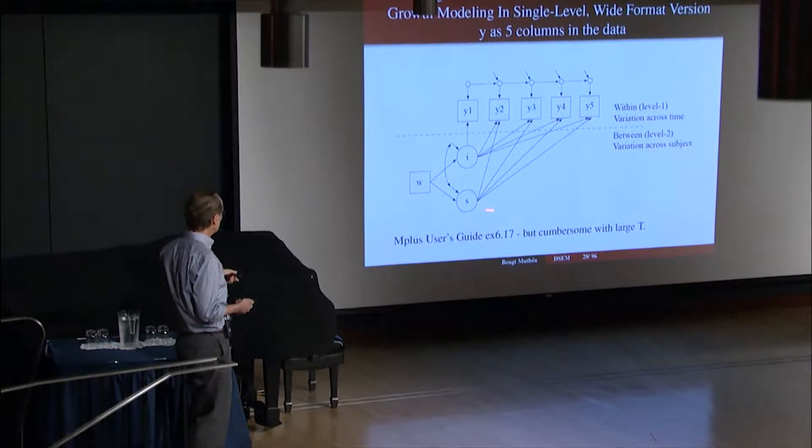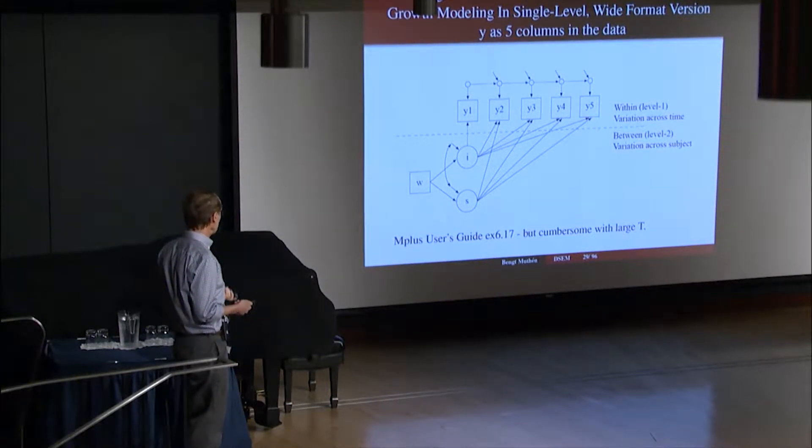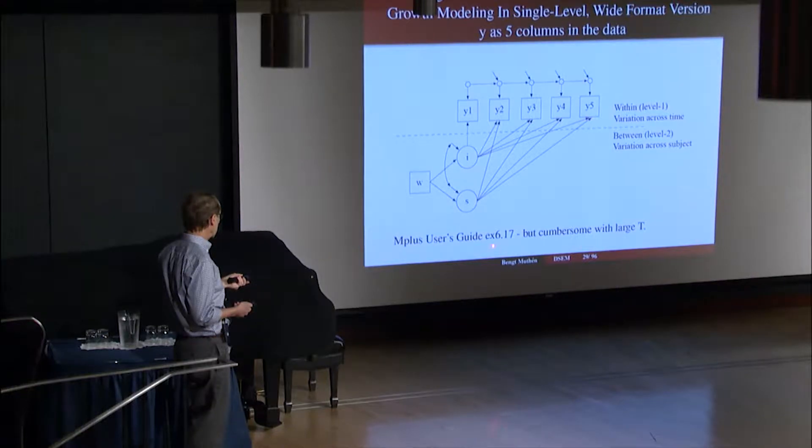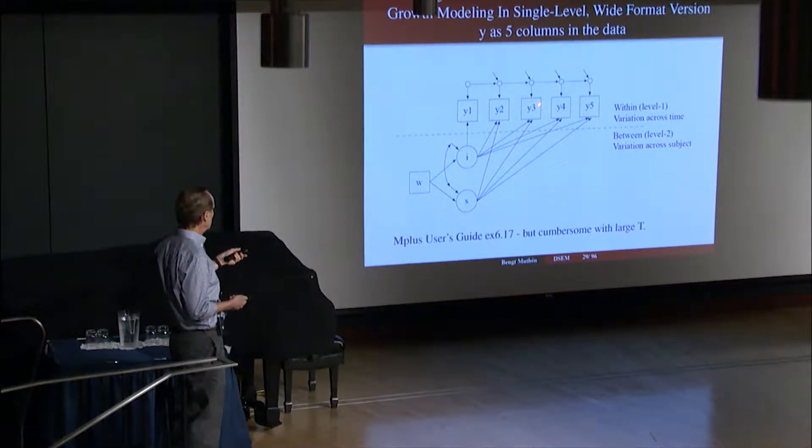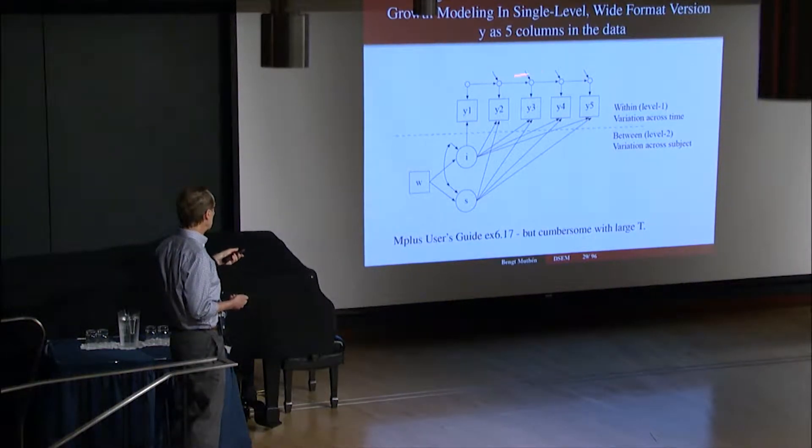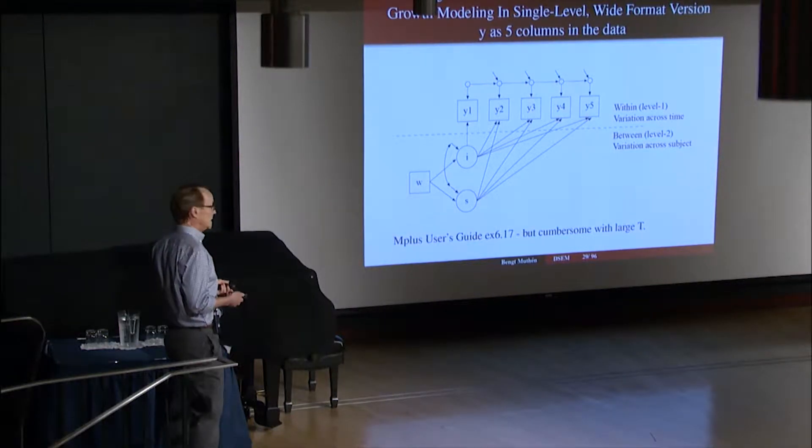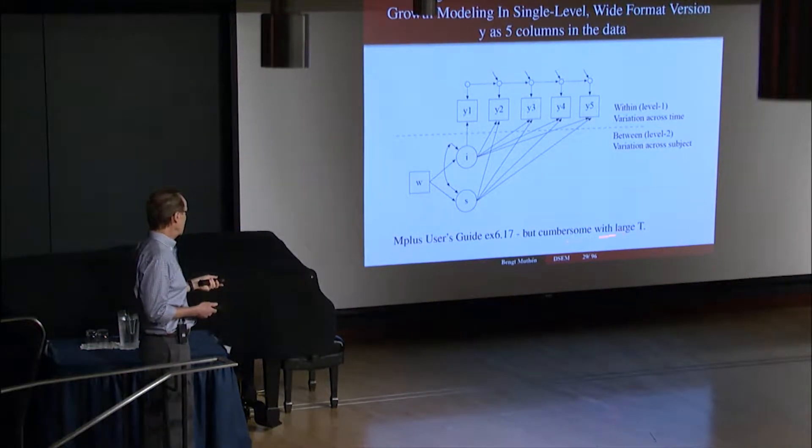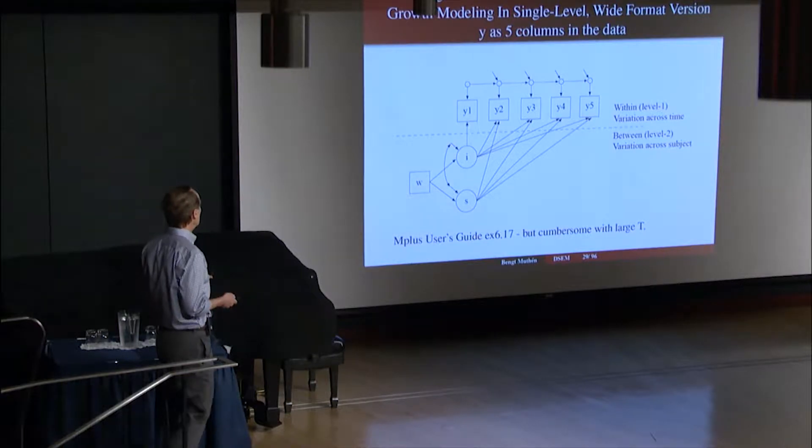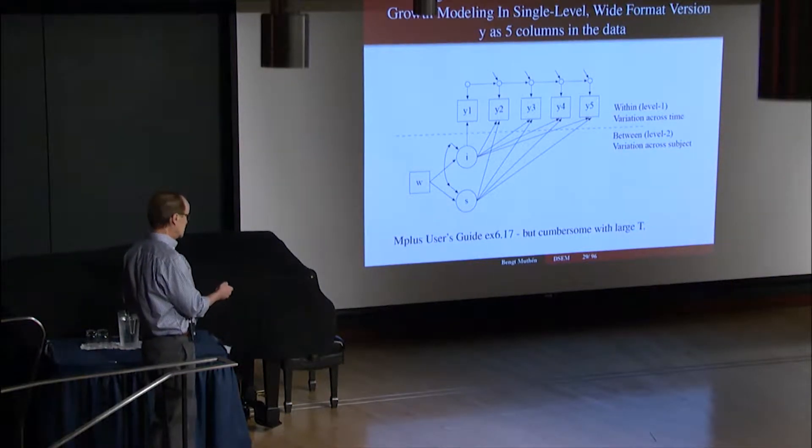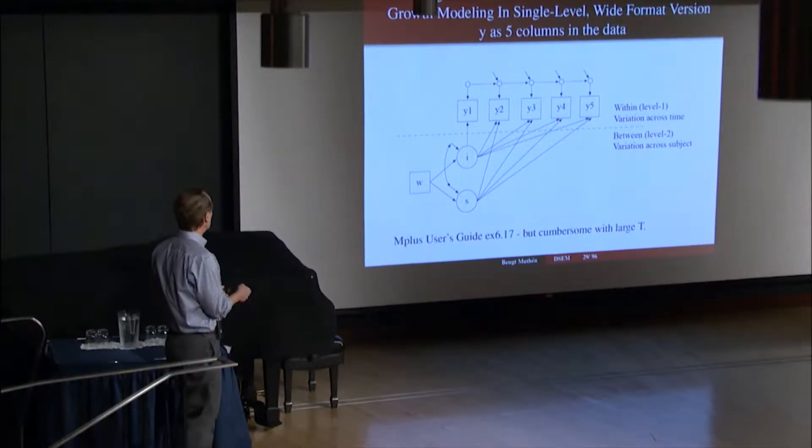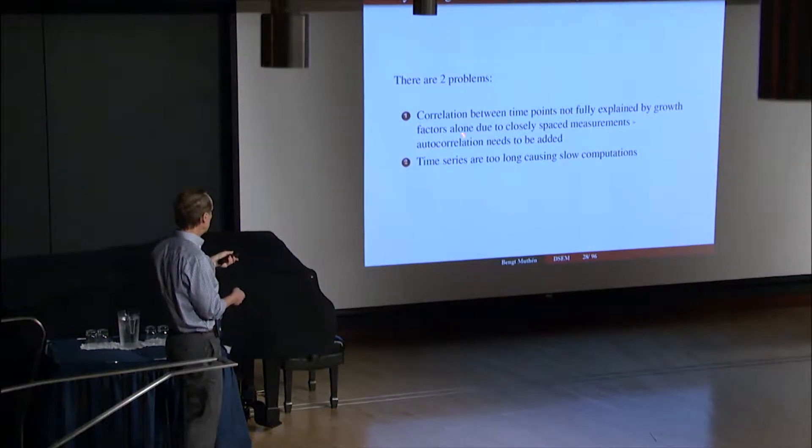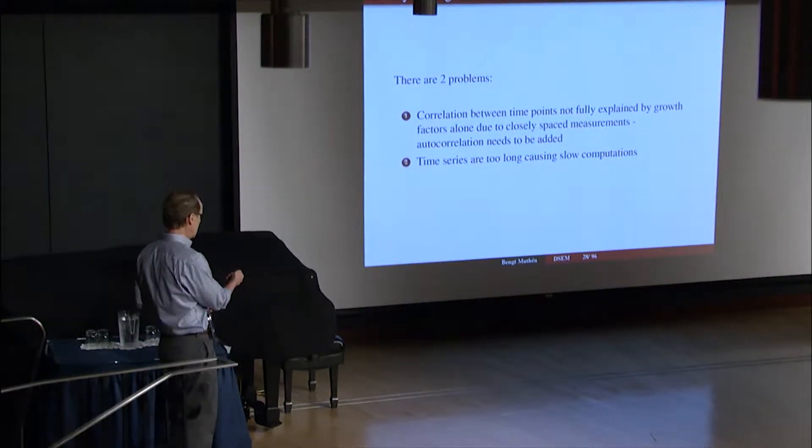This is doing it in a single-level wide format. We have an example in the user's guide, Example 6.17, that shows how to do this autoregression among the residuals. The approach gets a little cumbersome with large T though, so it's not really a total solution to problem 1—problem 1 being the correlation between time points that we need to handle well.